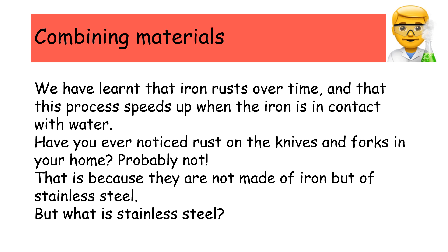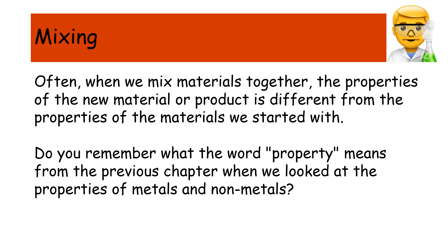We have learned that iron rusts over time, and this process speeds up when the iron is in contact with water. Have you ever noticed rust on the knives and forks in your home? Probably not — this is because they are not made of iron, but of stainless steel. But what is stainless steel? When we mix materials together, the properties of the new material are often different from the properties of the materials we started with.